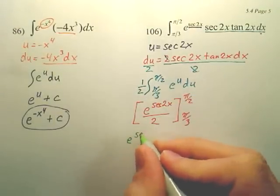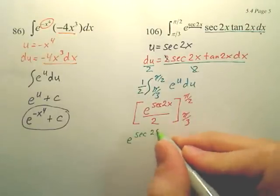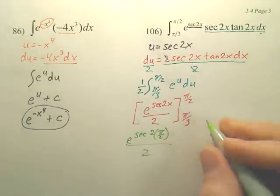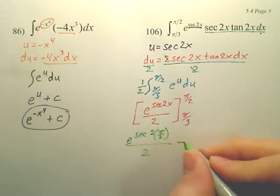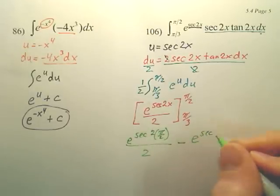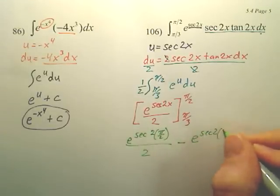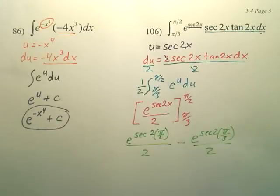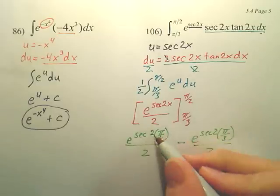We have e to the secant 2 times pi over 2 minus e to the secant 2 times pi over 3 over 2. This is a phenomenal theorem of calculus.